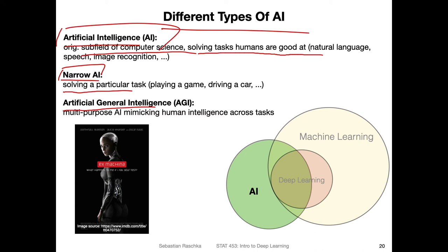A narrow AI can only do one task, unlike a human who can do multiple things — skiing, cooking, writing emails, recording a lecture, and so on. A narrow AI system can only do the one thing it was developed for. In contrast, artificial general intelligence is a multi-purpose AI, mimicking human intelligence across multiple tasks. For example, the robot in the movie Ex Machina would be more like an AGI agent, able to do things a human can do — not only classifying images.